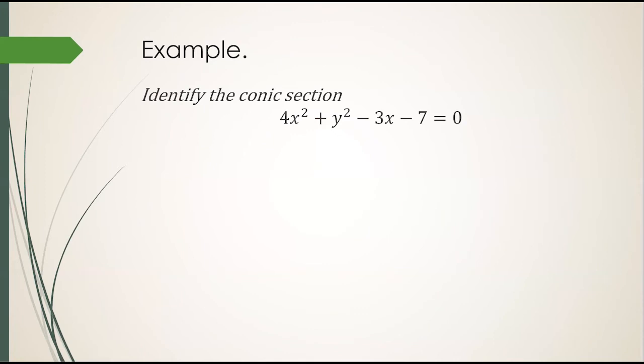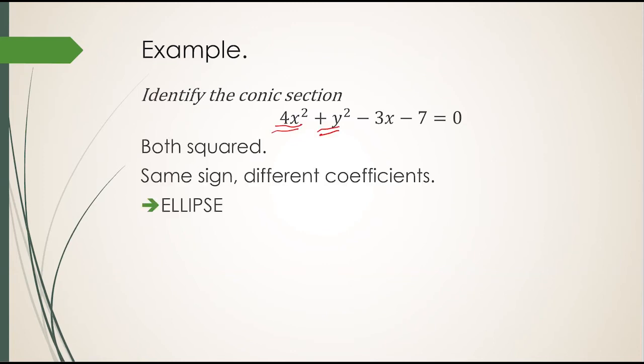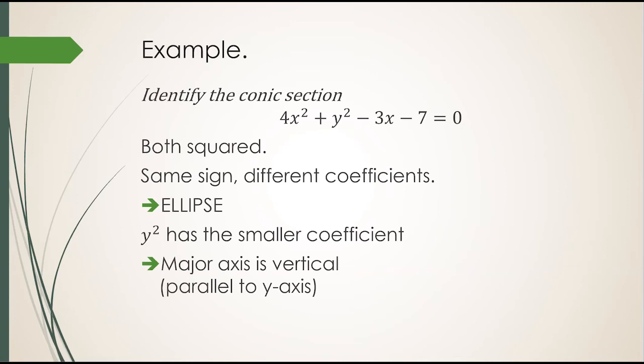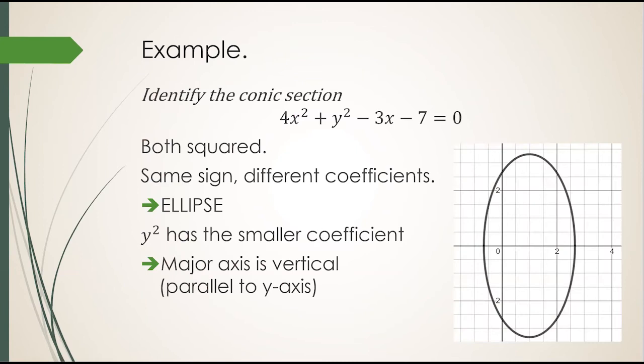Here's an example. 4x squared plus y squared minus 3x minus 7 equals 0. Both variables are squared, same sign, different coefficients, makes it an ellipse. Now for more details. Y squared has the smaller coefficient, meaning in standard form it would have the larger denominator. So that makes it the major axis. The major axis is vertical along the y direction. Sure enough, here's the graph from Desmos.